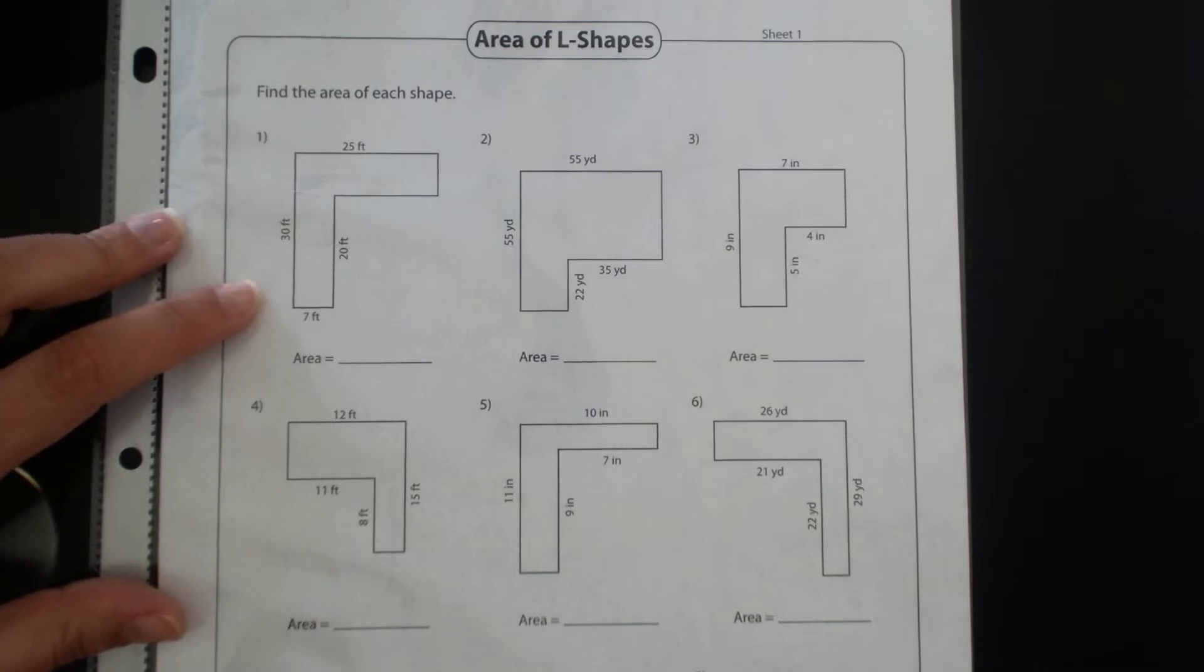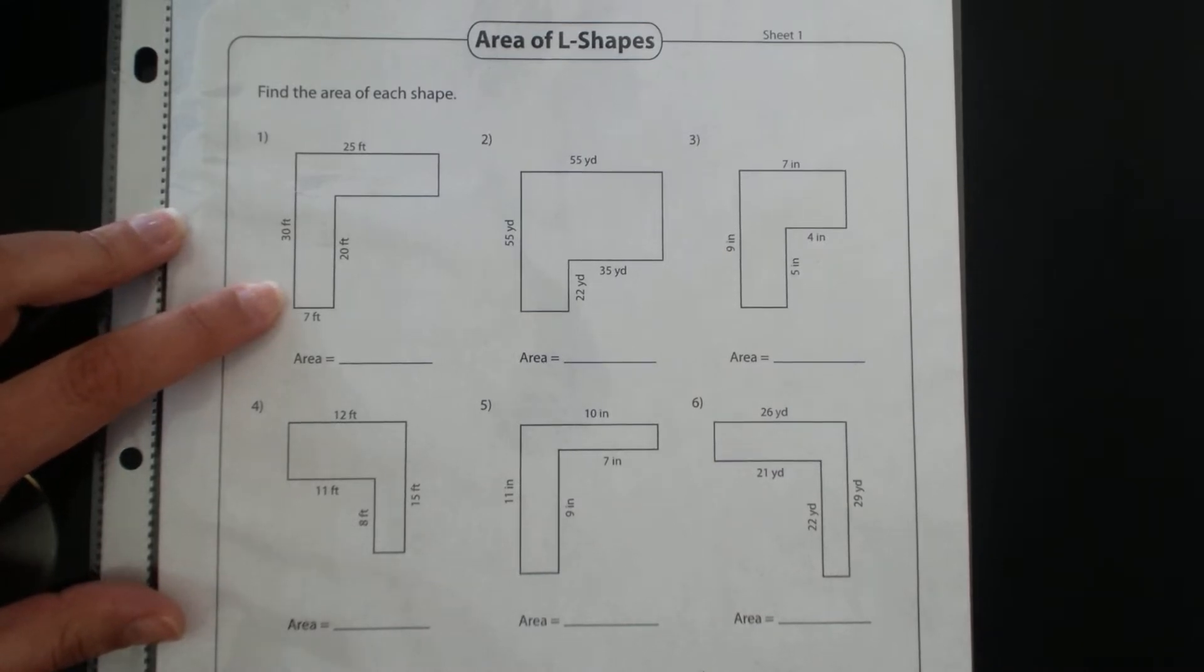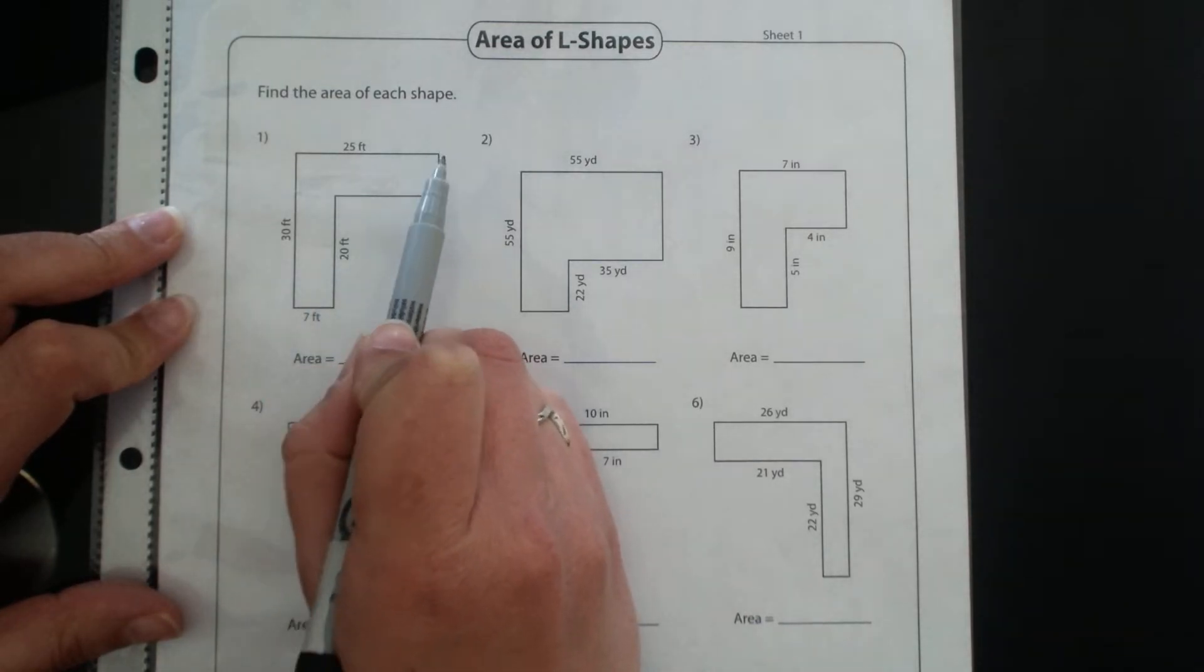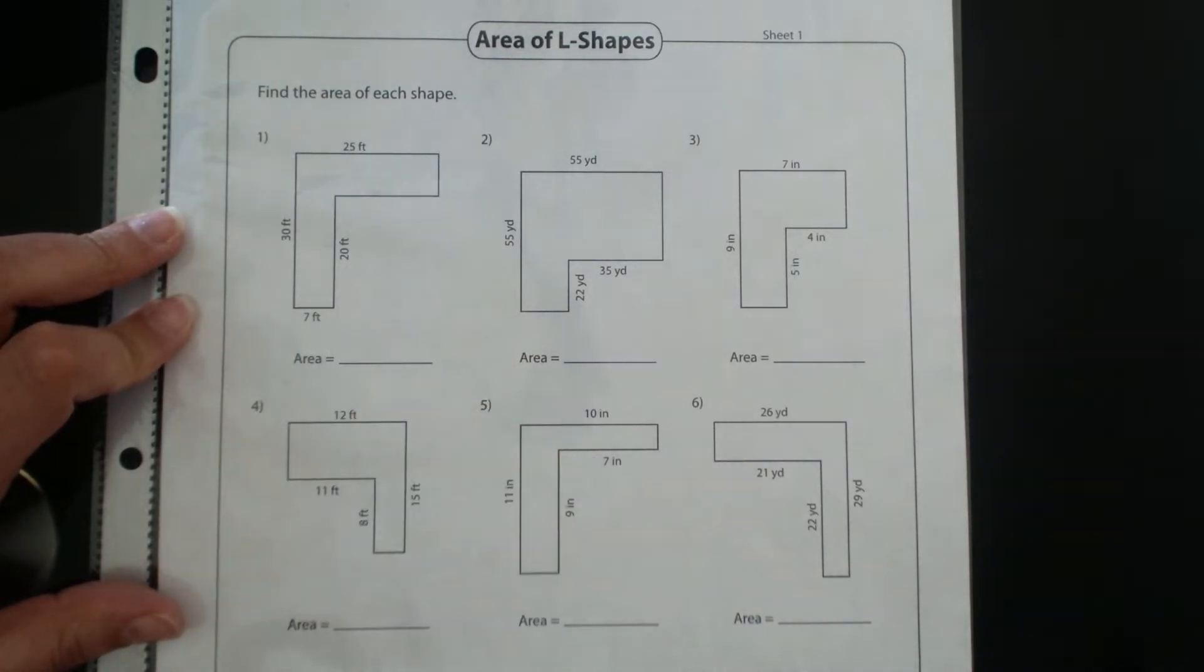So number one, first thing you should notice is what side lengths do you have and what side lengths are you missing. Right away you should notice that you have a couple that are missing, and we'll be able to actually use the other side lengths to determine what those are.